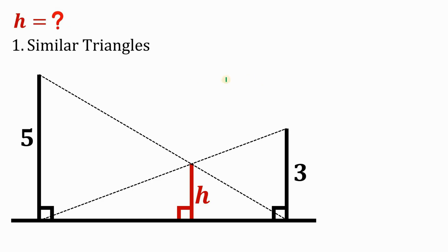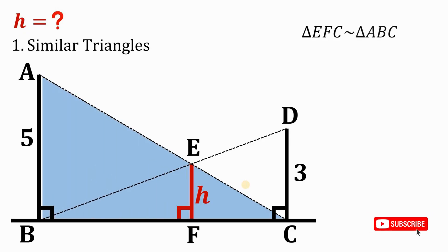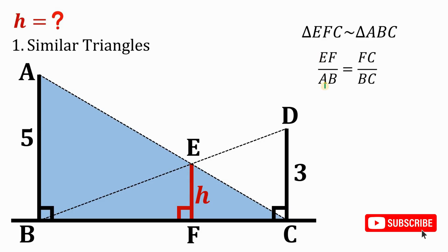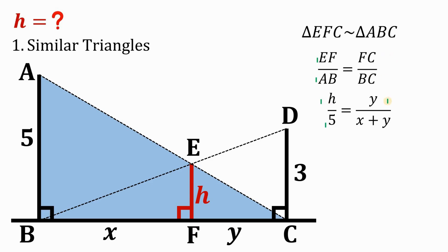Let's name some important points. Call this point A, this is point B, this is point C, D, E, F. Now let's focus on triangle EFC. It's not hard to see that triangle EFC is similar to triangle ABC. Since they are similar, we can say EF over AB equals FC over BC. Let's call FC and BF as Y and X respectively. So EF is H, AB is 5, FC is Y, and BC is X plus Y. Let's set this result aside.